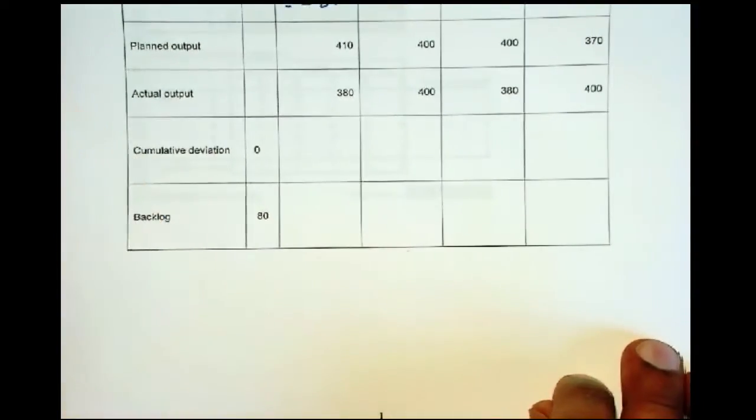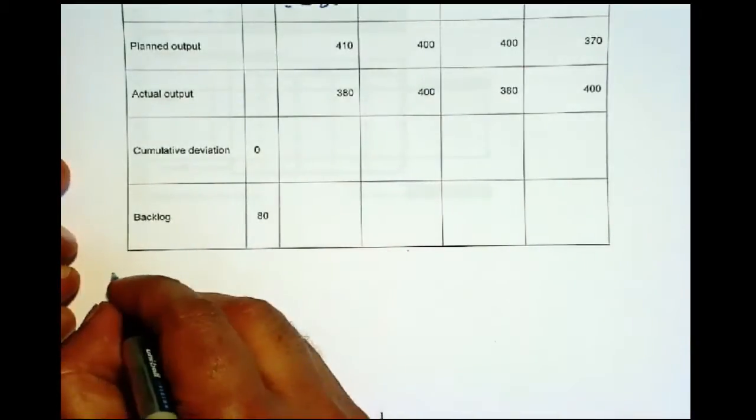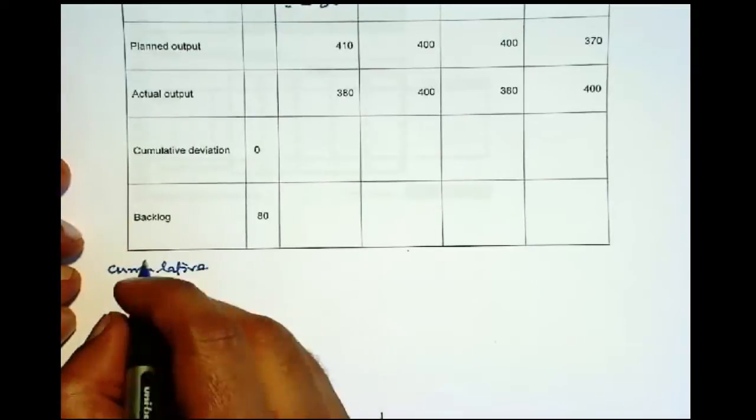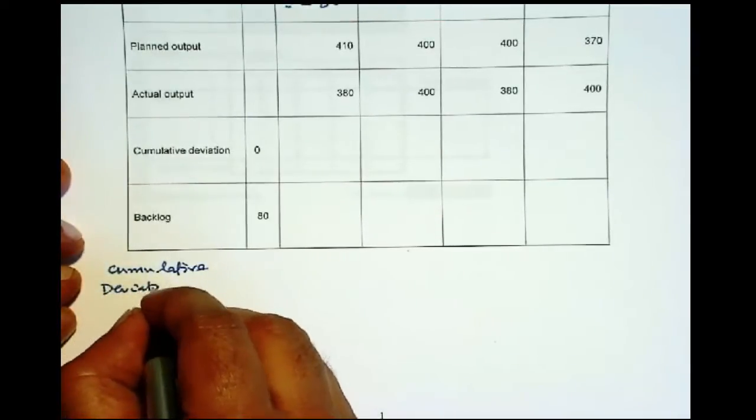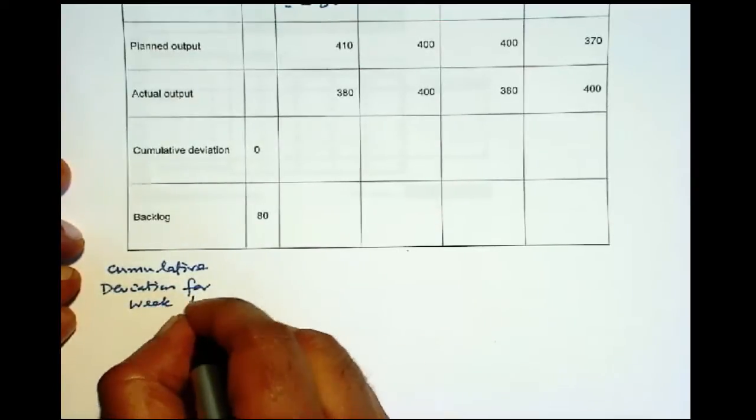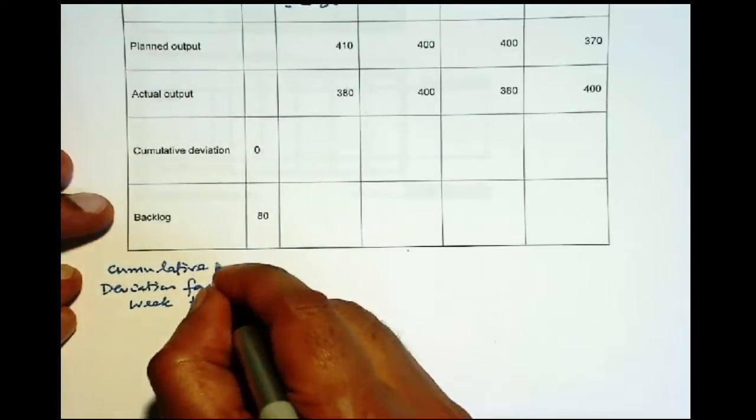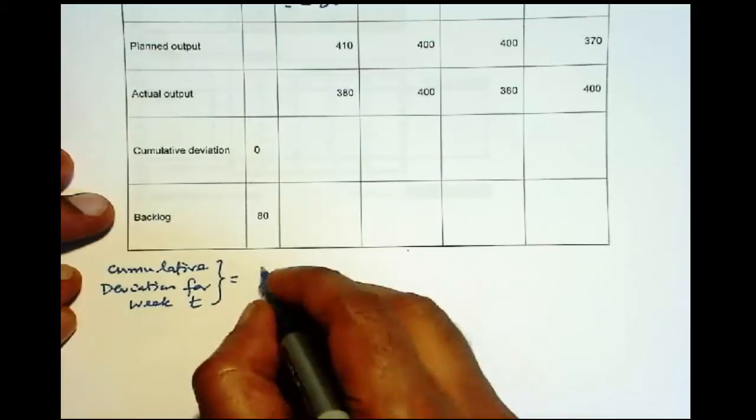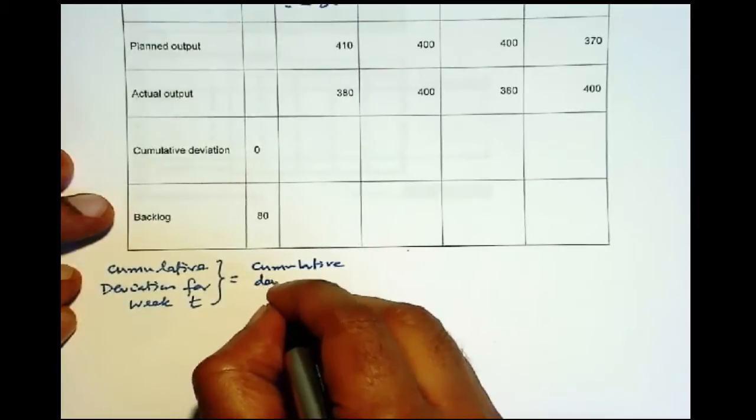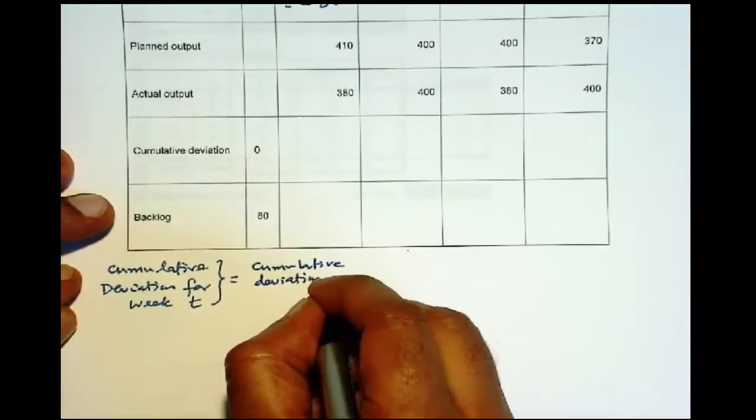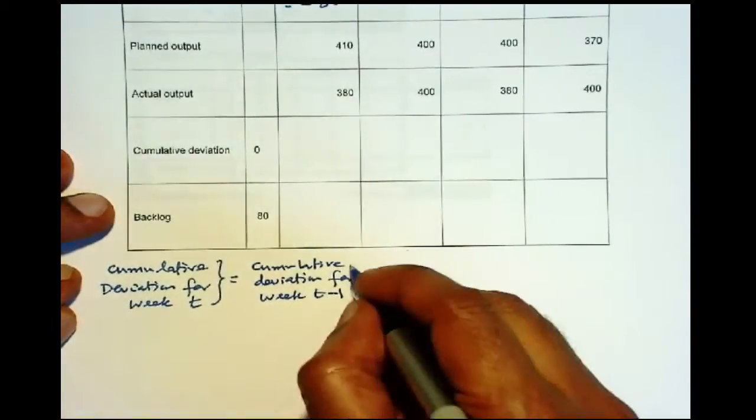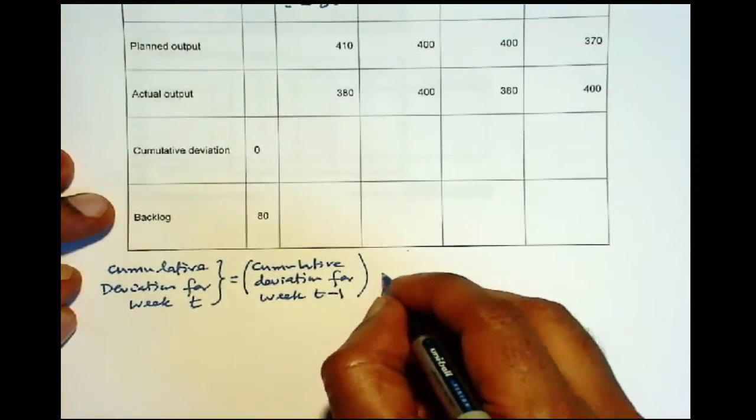Let me write a small formula for this. So we have cumulative deviation for week T, for example. So that is equal to cumulative deviation for week T minus 1. So that is the previous cumulative deviation.